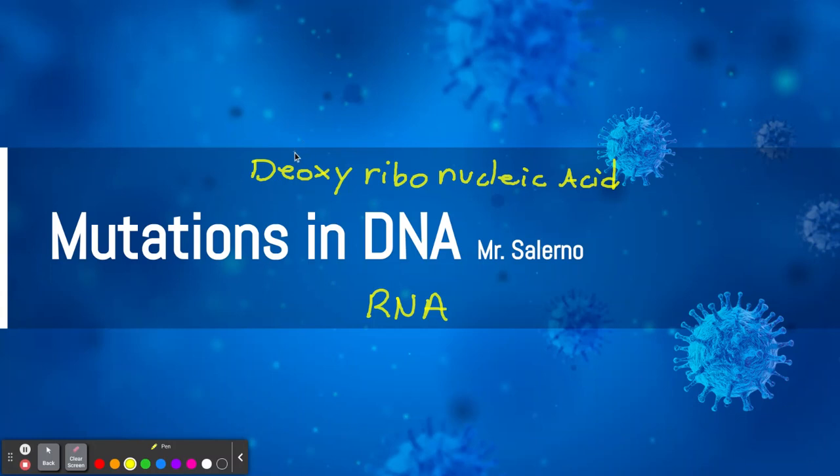Deoxy, that word deoxy means missing an oxygen. And I'll show a picture and tell you what that means. Just missing an oxygen. When you see the picture, you'll understand it. And then we have ribo. Ribos means having five. And the picture will explain that also. Now, nucleic acid, these are those nucleotide bases. These building blocks. So over here, we'll put a little arrow. We'll say these building blocks.